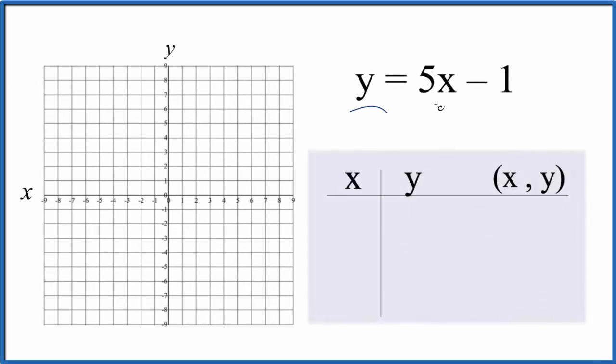Let's graph the linear equation y equals 5x minus 1 and we'll do it two ways. First we'll use a table of values and then we'll check our work with slope intercept formula. Let's start by putting some values in for x.